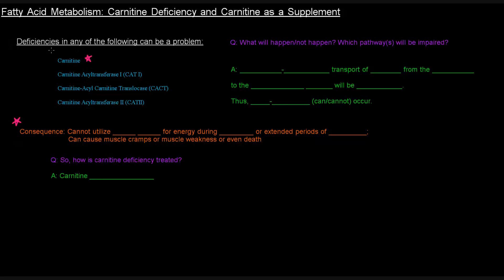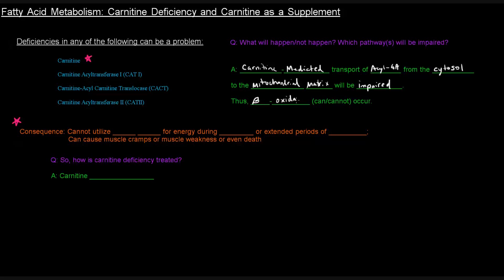Deficiencies in any of these can be a problem. Specifically, what will happen — or not happen — is the question. Which pathways will be impaired? Well, we know that these are all involved in the carnitine-mediated transport of acyl-CoA's from the cytosol to the mitochondrial matrix. So if there are deficiencies in those role players, the transport of acyl-CoA's from the cytosol to the mitochondrial matrix will be impaired — in fact, it won't happen. So if we're not getting acyl-CoA's to the mitochondrial matrix, then beta-oxidation cannot happen.